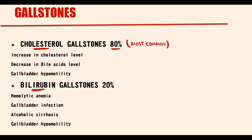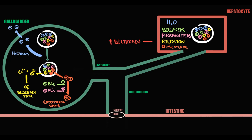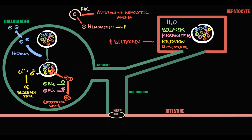Bilirubin stones are less common than cholesterol stones, occurring in approximately 20% of cases. The most important risk factor of bilirubin stones is an increase in blood bilirubin level, which is the case in autoimmune hemolytic anemia. In this case, massive destruction of red blood cells results in massive release of hemoglobin into the blood. Hemoglobin is degraded into bilirubin, and with an increase in blood bilirubin level, the amount of bilirubin in the bile increases. The higher the bilirubin level in the bile, the greater the chance that bilirubin will bind calcium, and in the form of calcium bilirubinate it will precipitate with formation of bilirubin stones, which can cause obstruction of the cystic duct or common bile duct.